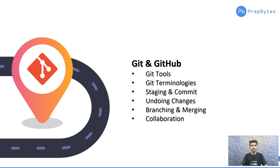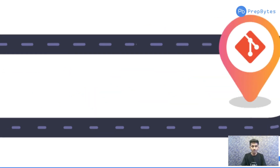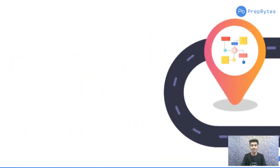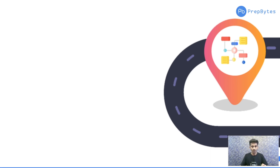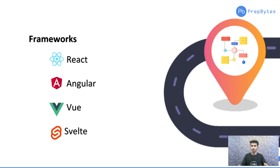This brings us to the last milestone in our front-end development roadmap: frameworks. Frameworks don't replace HTML, CSS, and JavaScript — they support you in the production of your web application. They provide web resources, APIs, and more to make overall production far more efficient. The market offers many frameworks including React, Angular, Vue, and Svelte.